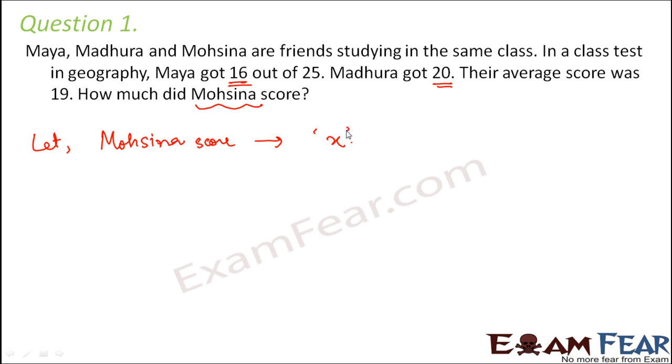Now what is the condition that is given in the question? The condition is that the average of their score is given as 19. Now considering Mohsena's score is X, Maya's score is 16 and Madhura's score is 20, how do we find the average of their scores? We have learned how to find average in the previous lesson. So average is about summing them up divided by their numbers.